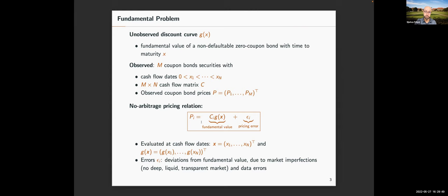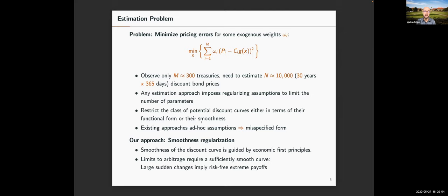A straightforward idea would be to minimize weighted pricing errors: choose some exogenous weight and find a discount curve that minimizes pricing errors based on the law of one price. The issue is that we observe only around 300 treasuries, but to get the discount curve for 30 years we need to estimate 10,000 data points per day. Any estimation approach must impose some regularization structure. Most approaches assume some form of ad hoc parametric assumptions or make relatively ad hoc non-parametric assumptions to deal with this dimensionality issue.